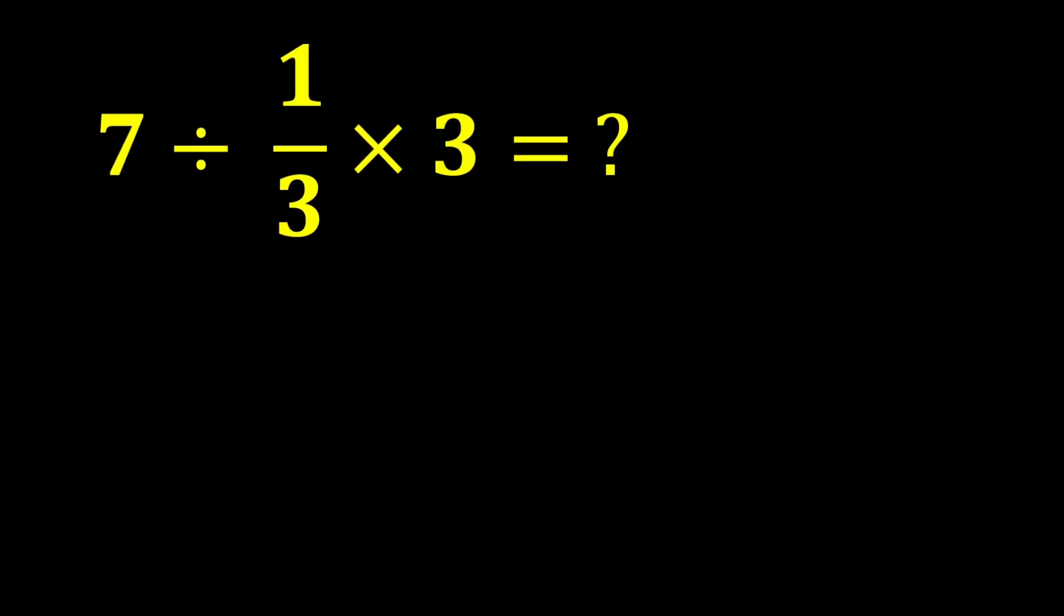The expression is 7 divided by 1 over 3 times 3. In this expression, there is both division and multiplication. Since they have equal priority, we move from left to right and perform whichever operation we reach first. If we move from left to right in this expression, we first reach division, so we perform the division first.